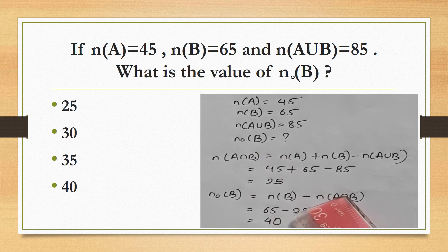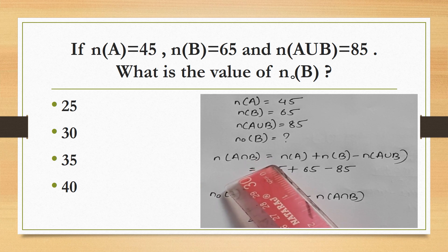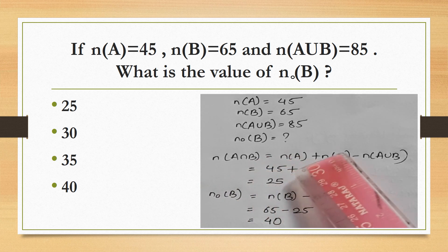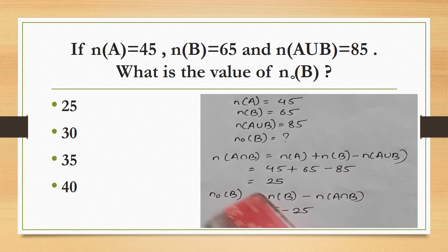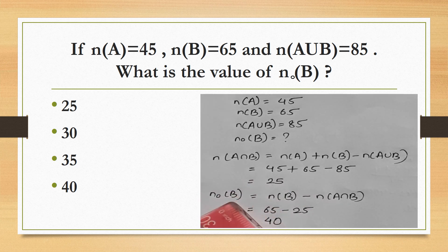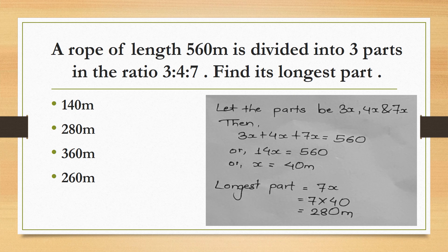To find n(only B), we first need n(A intersection B). The formula is: n(A intersection B) = n(A) + n(B) − n(A union B) = 45 + 65 − 85 = 25. Then n(only B) = n(B) − n(A intersection B) = 65 − 25 = 40.